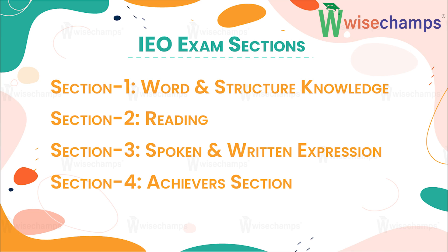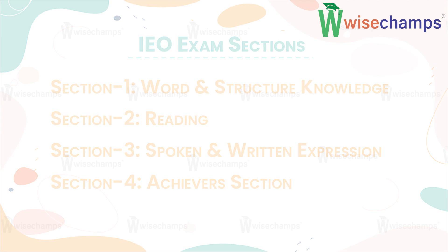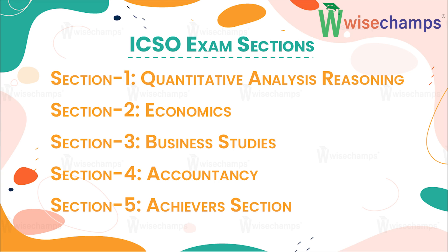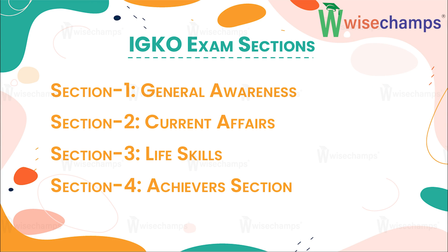For IEO: Section 1 is Word and Structure Knowledge, Section 2 is Reading, Section 3 is Spoken and Written Expression, and Section 4 is Achievers Section. For ICSO: Section 1 is Quantitative Analysis and Reasoning, Section 2 is Economics, Section 3 is Business Studies, Section 4 is Accountancy, and Section 5 is Achievers Section. For IGKO: Section 1 is General Awareness, Section 2 is Current Affairs, Section 3 is Life Skills, and Section 4 is Achievers Section.